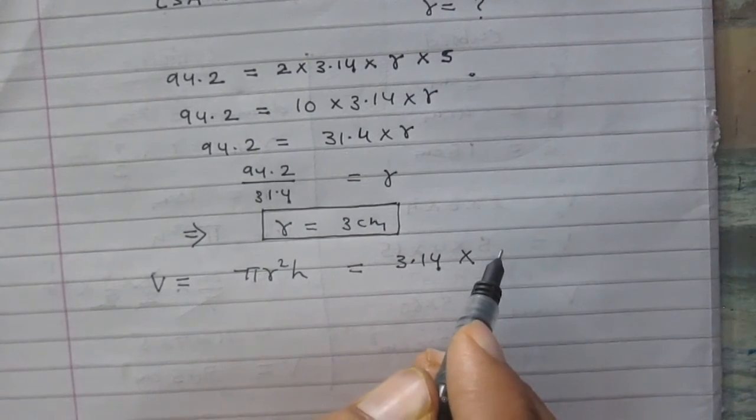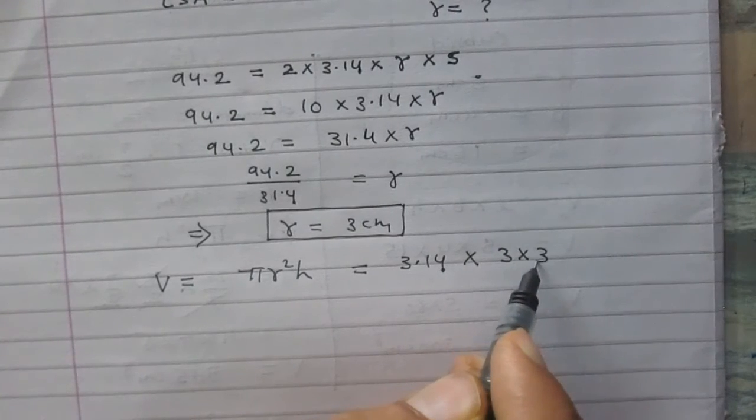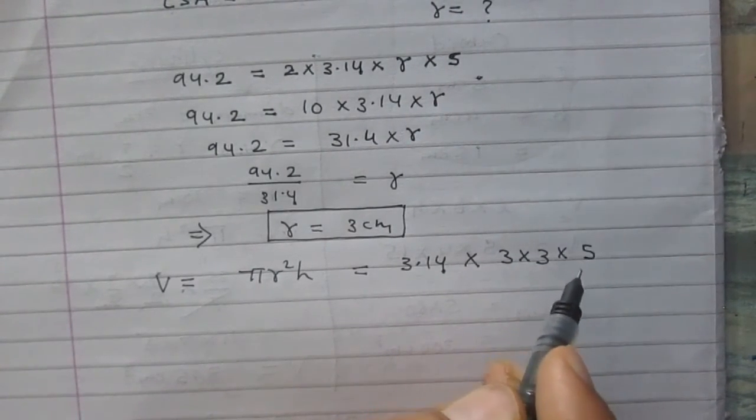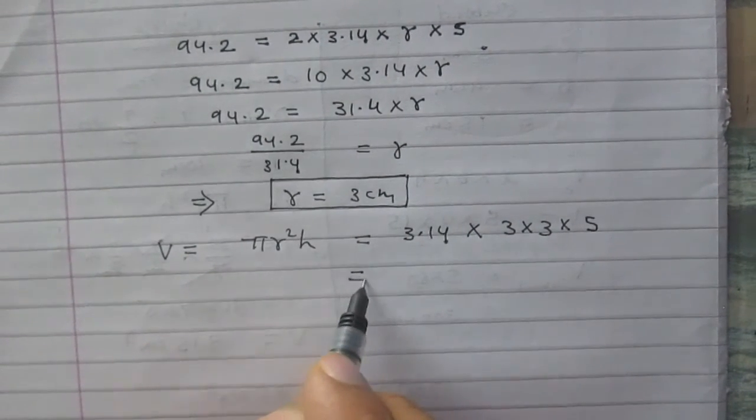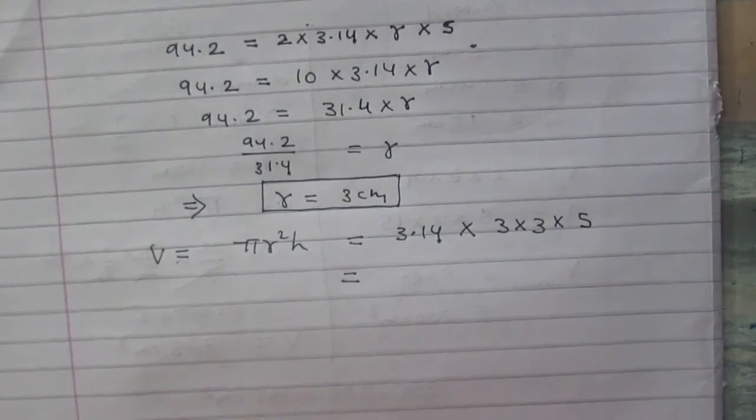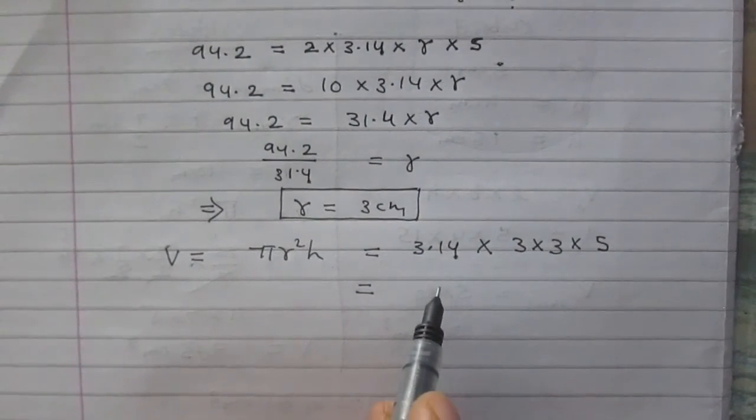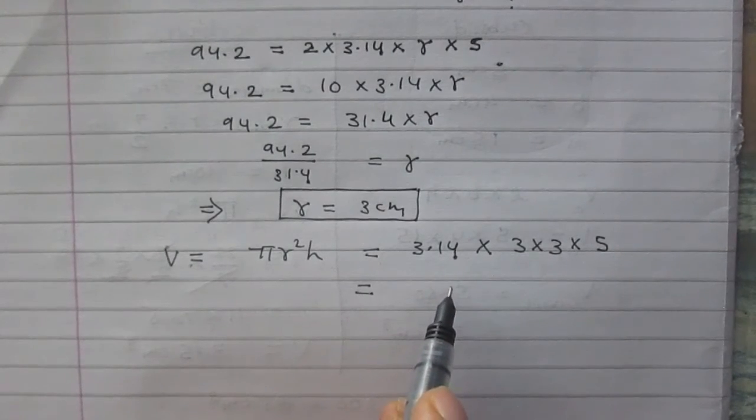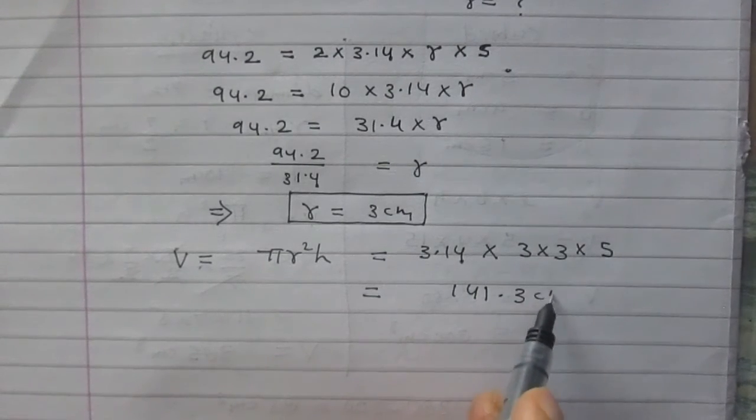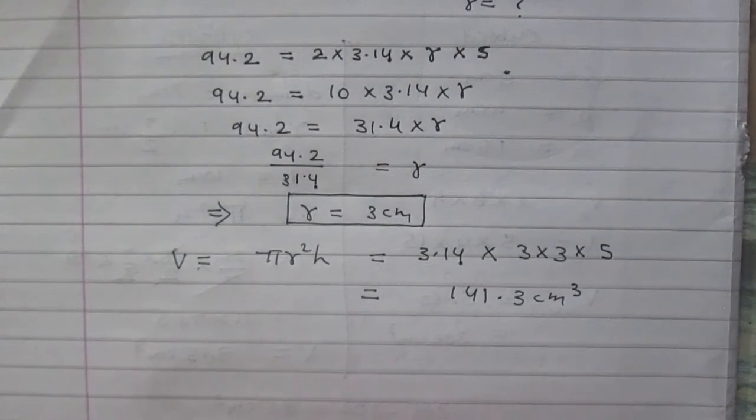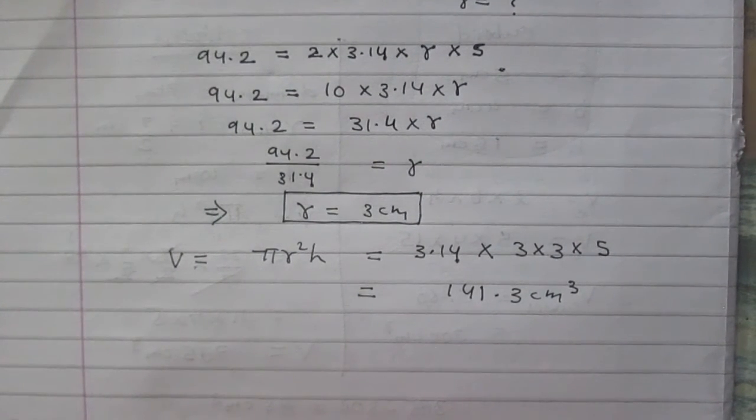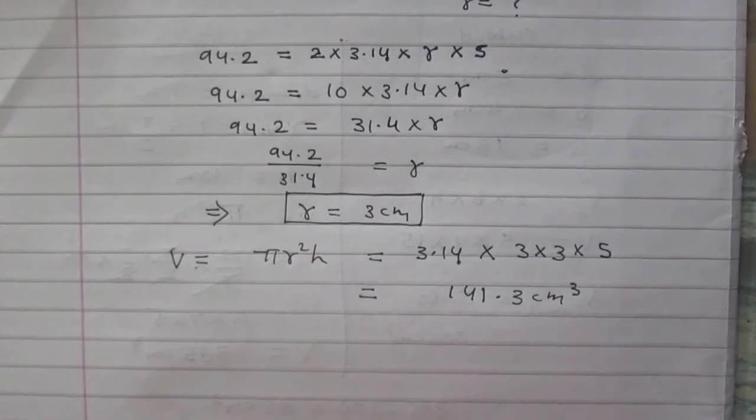The radius is 3 cm, so r² is 3 multiplied by 3, and h is 5 cm. After calculation you will get the value of volume is 141.3 cm³, so volume of this cylinder is 141.3 cm³.